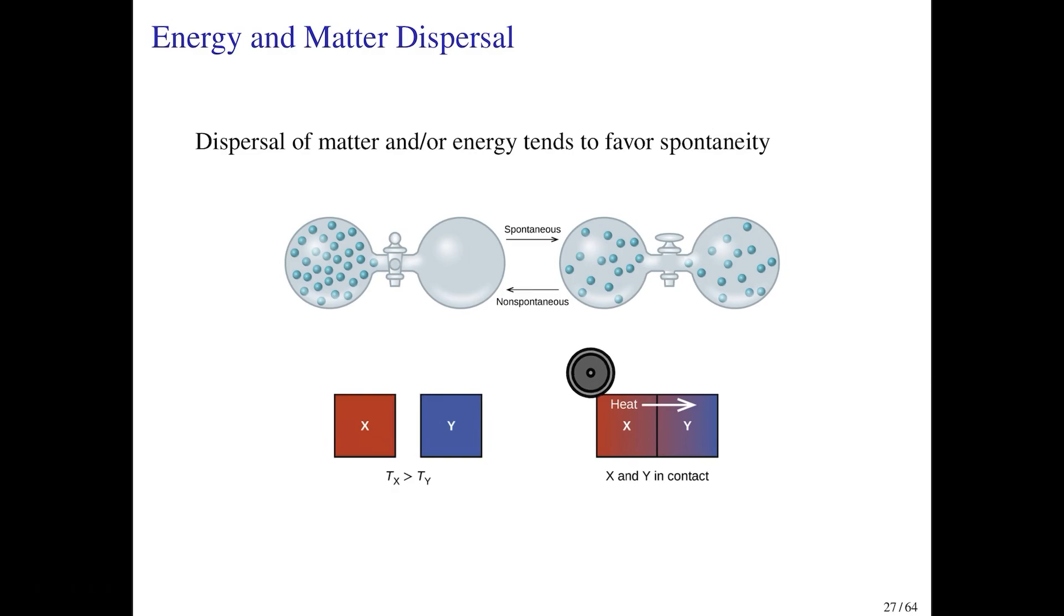You don't have to do anything other than bring the boxes into thermal contact in order for that dispersal of energy to occur. You never ever see an object that has a uniform temperature suddenly, on its own, divide into a hot side and a cold side. It never goes spontaneously in the other direction.